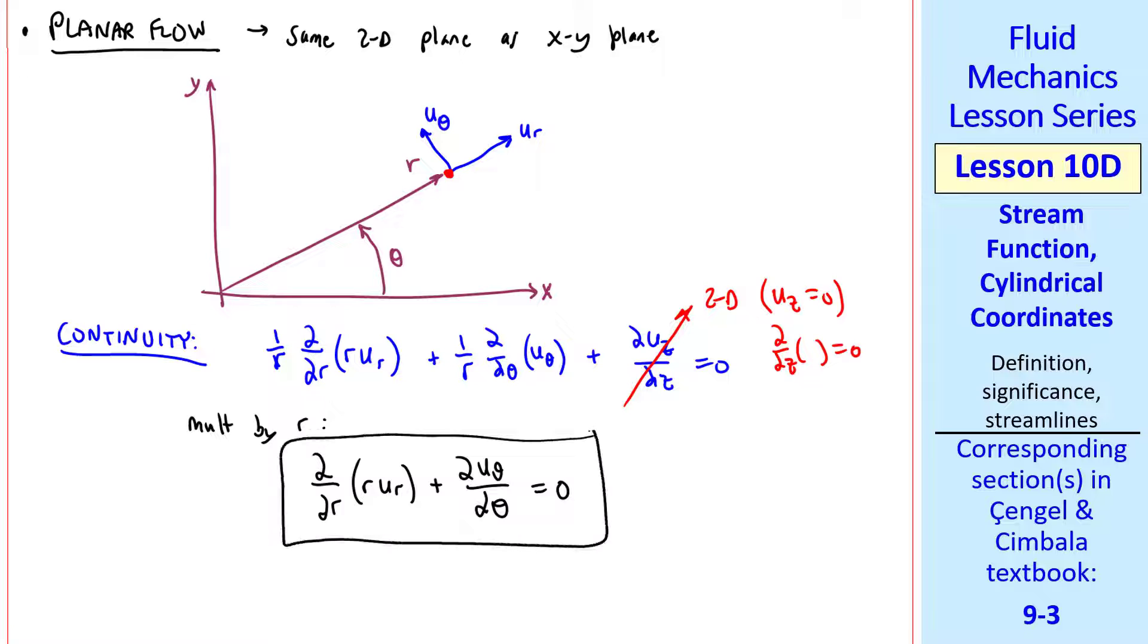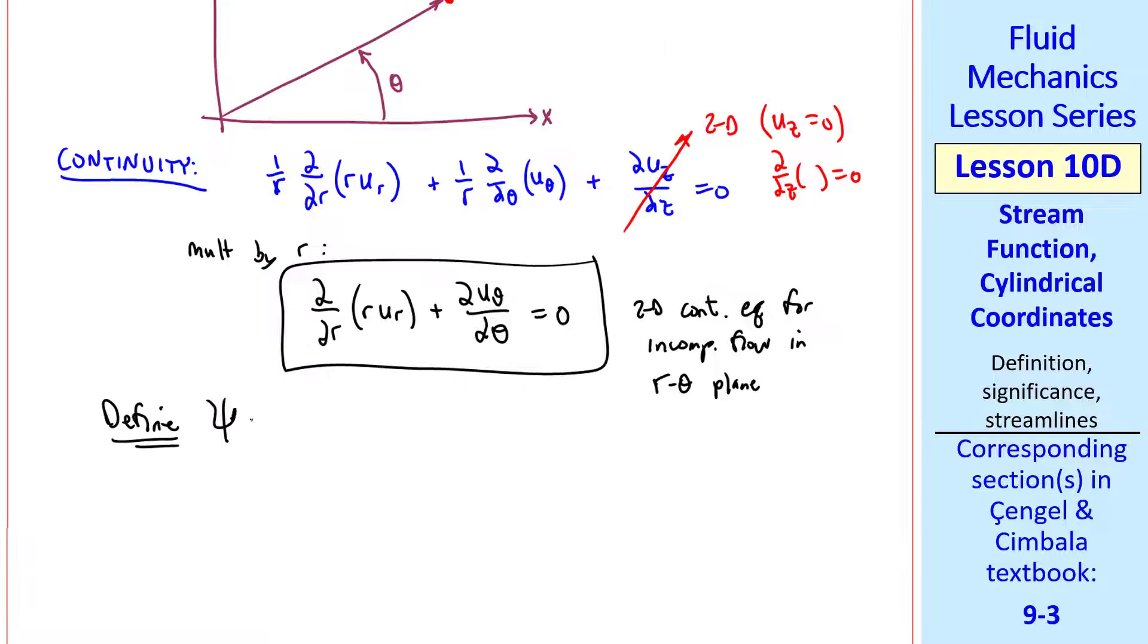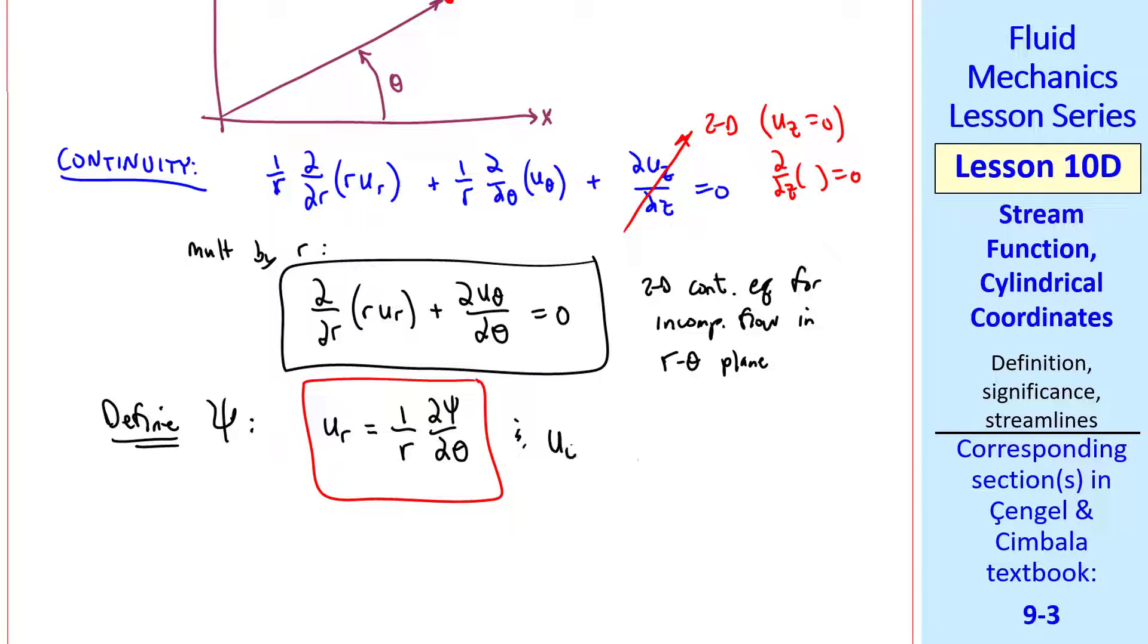So we get this 2D continuity equation for incompressible flow in the R-theta plane. Now we define psi, the stream function, in such a way that it exactly satisfies this continuity equation. Here's the definition that we use. U_R equals 1 over R del psi del theta, and U_theta is negative del psi del R.